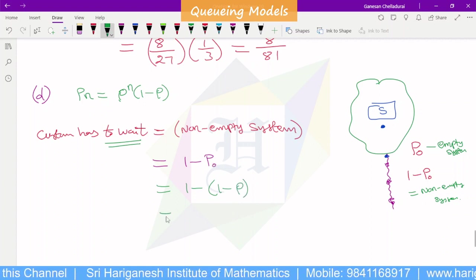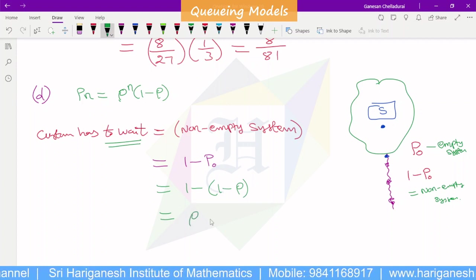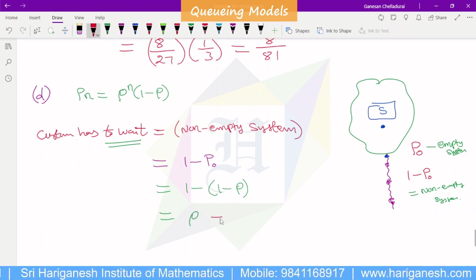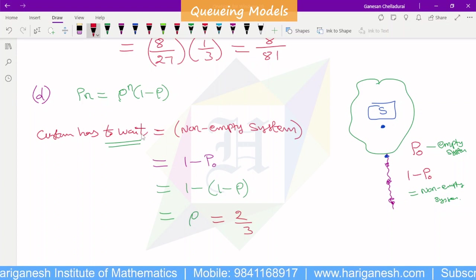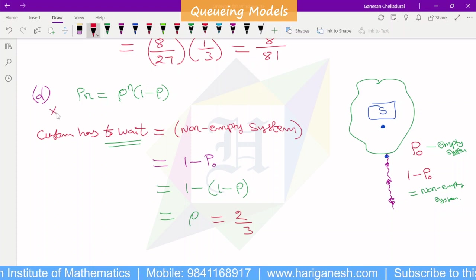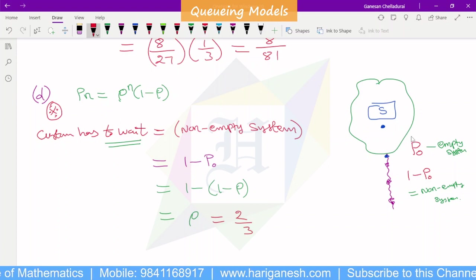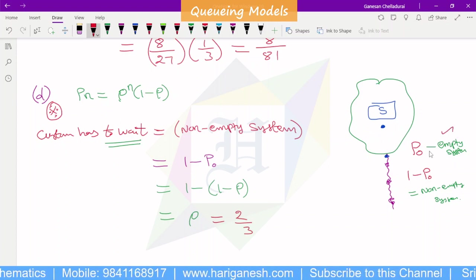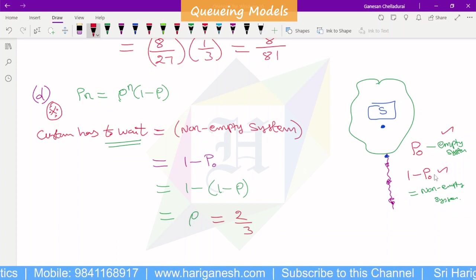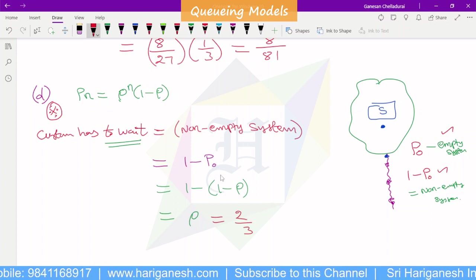Rho value, rho is already 2 by 3. This is the answer. Probability of customer has to wait, the probability is 2 by 3. This is the answer. It is important. All of this is important. Customer wait is non-empty system. Customer wait is non-empty system. Non-empty system is 1 minus P0. Empty system is P0. This is clear. Okay.